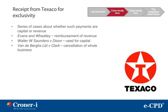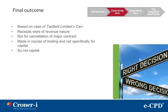What about the receipt from Texaco for exclusivity? There are a series of cases about whether such payments are capital or revenue, and they include Evans and Wheatley involving the reimbursement of revenue, Walter W. Saunders versus Dixon used for capital, and Vandenbergs Ltd versus Clark dealing with the cancellation of the whole business. Based on the case of Tanfield Ltd versus Carr, the receipts were of a revenue nature, not for the cancellation of a major contract. They were made in the course of trading and not specifically for capital. So the decision would be that they are not capital.